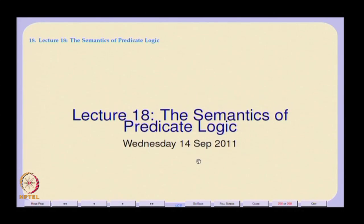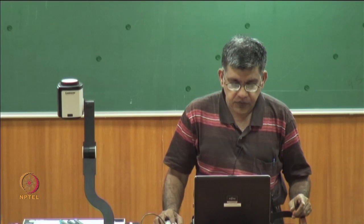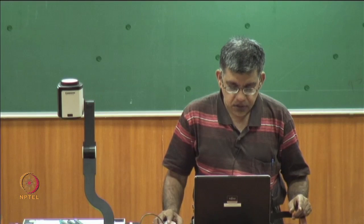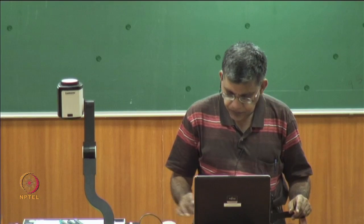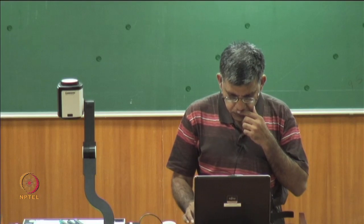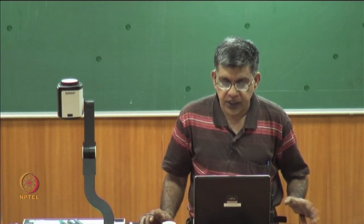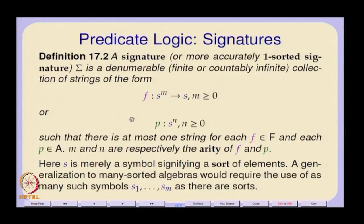Today we will start the semantics of predicate logic. Before that, let us quickly go through the syntax of predicate logic. We have a countably infinite collection of variable symbols, a set of terms, and a countably infinite collection of atomic predicate symbols. We are usually interested in a signature.